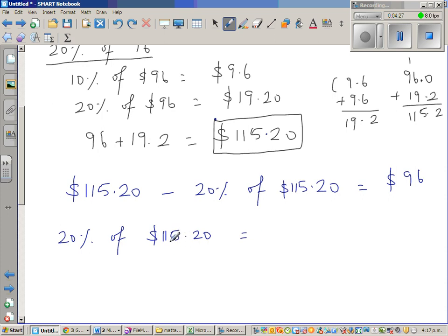20% of 115.2 is - so 10% is $11.52. $11.52 is 10% plus $11.52, that's $23.04. Now even without adding it, you can say the answer is not making sense.